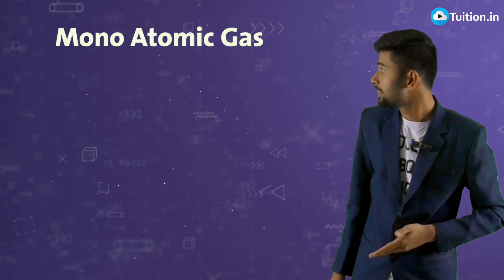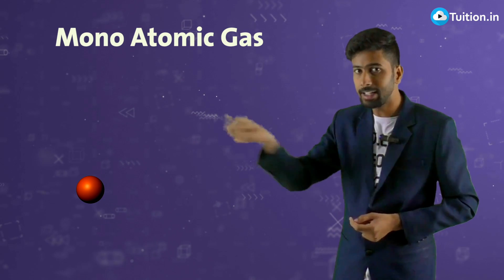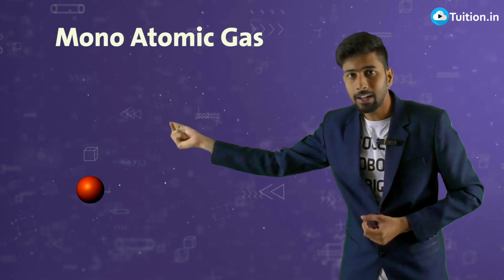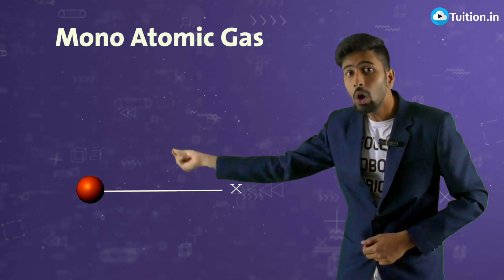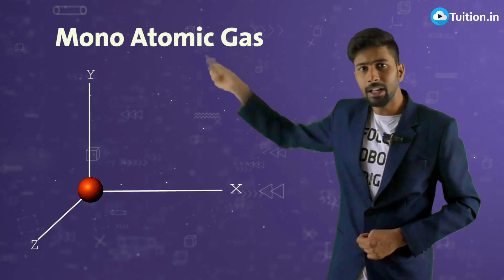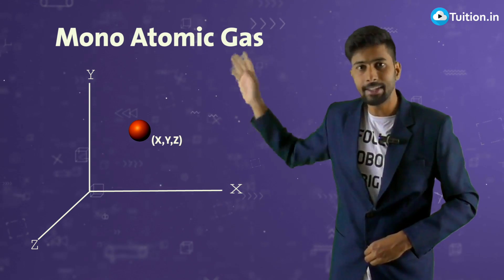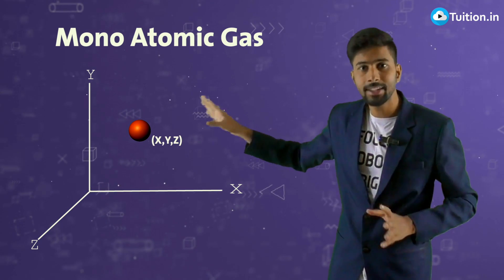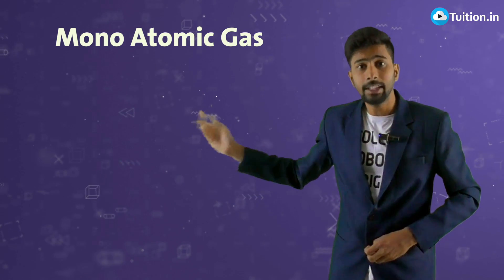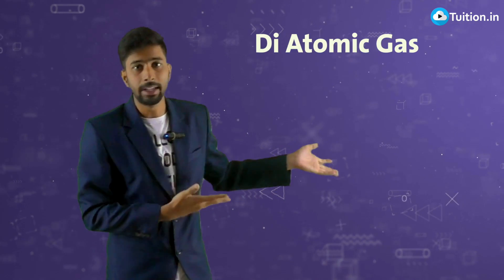Take a monoatomic gas first. If you pick up any molecule — basically just an atom, since every molecule is just an atom in this case — this atom can move either in the x direction, the y direction, or the z direction, or anything in between which is a combination of x, y, z. There is no fourth dimension possible. That is why the degrees of freedom for a monoatomic gas is three.